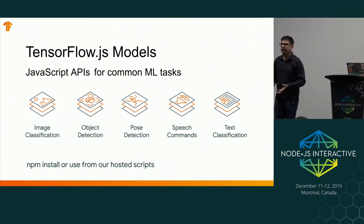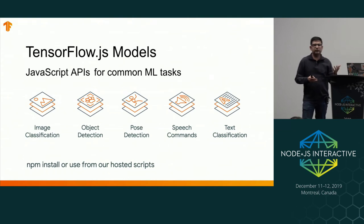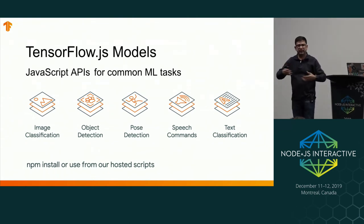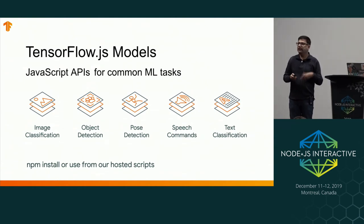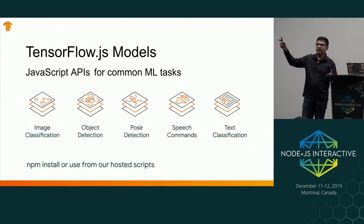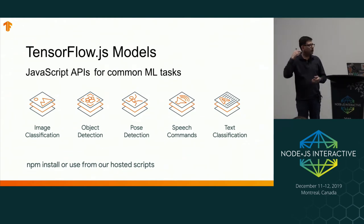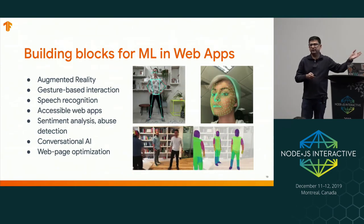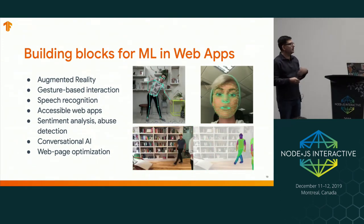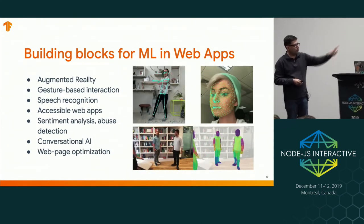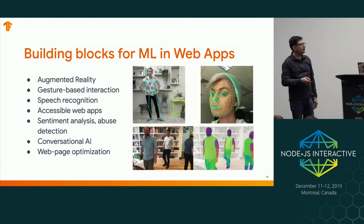We've pre-packaged a bunch of ML models for common tasks. There are models for image classification, object detection, and recognizing human pose — some of which were demoed at our booth. There's also a model for audio commands that can recognize spoken words to drive actions, and we're increasingly doing more around text, including sentiment analysis and toxicity detection. All of these models can be used with a script source from our hosted scripts or installed via npm. Using these as building blocks, you can build applications for accessibility, sentiment analysis, conversational agents, and more — all running client side.